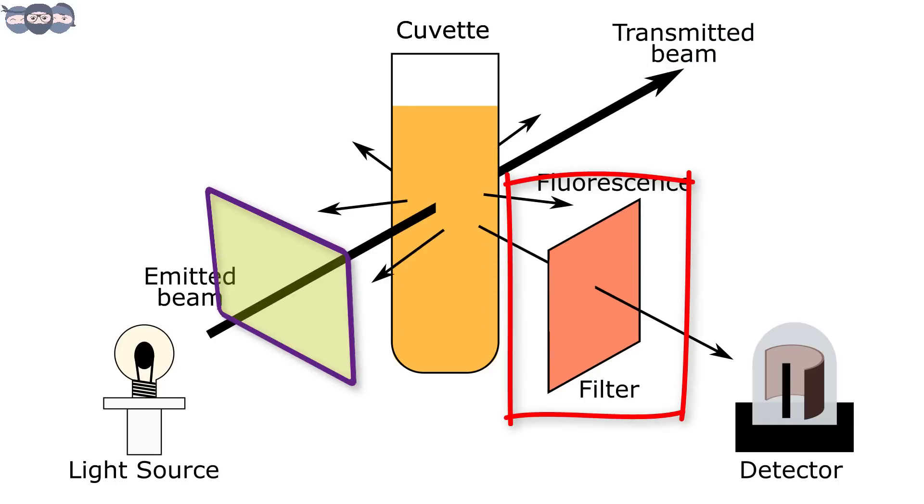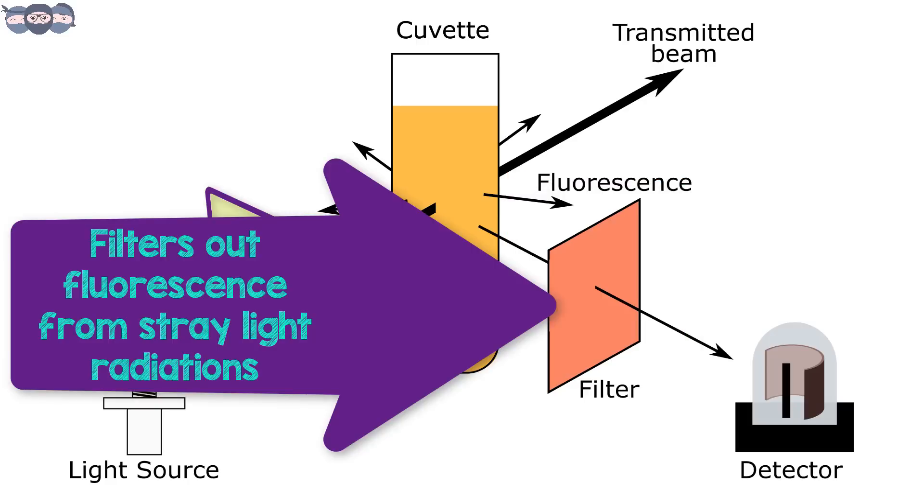The second filter is placed between the analyte and the detector. This filters out the phosphorescence radiations from the stray light, and only fluorescence is measured.